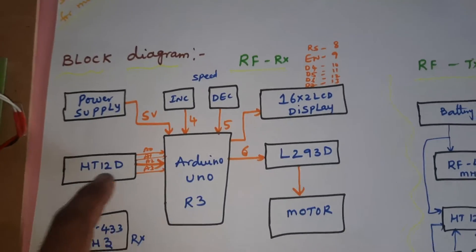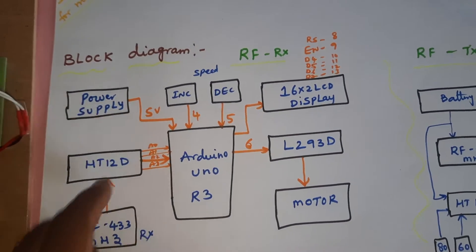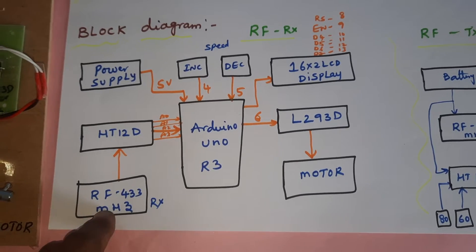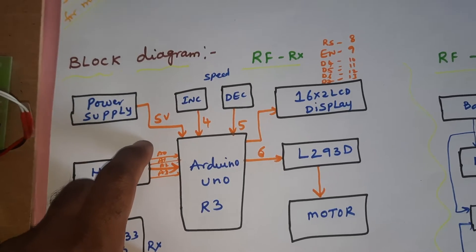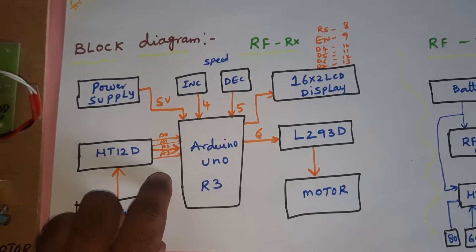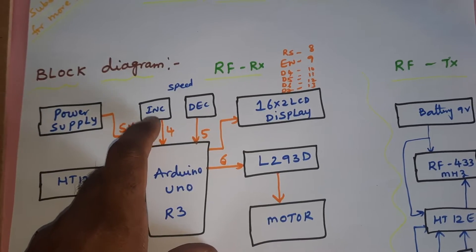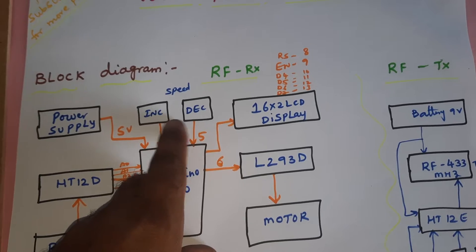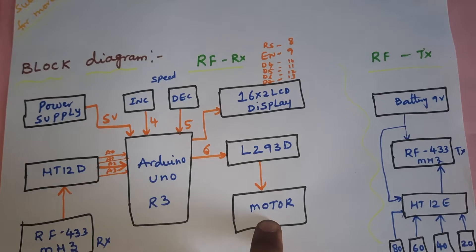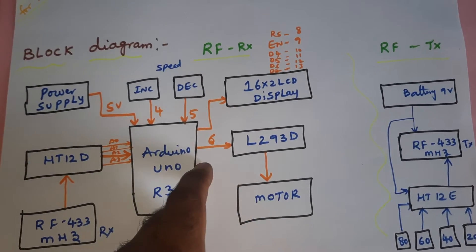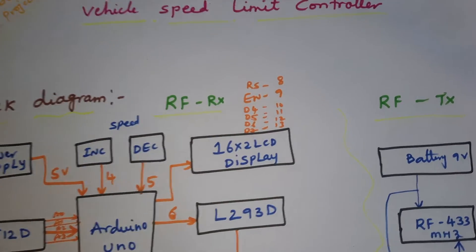In this project we are using a 16x2 LCD display, an Arduino Uno R3 board, a 5-volt power supply module, an RF 433 MHz receiver module connected to the HT12D decoder IC. These are connected with pins A0, A1, A2, A3, and increment/decrement switch buttons connected to the fourth and fifth pins, an L293D quadruple H-bridge driver IC, and a 300 RPM DC motor controlled with a PWM pin connected to pins 6, RS, EN, D4, D5, D6, D7, 8, 9, 10, 11, 12, 13.